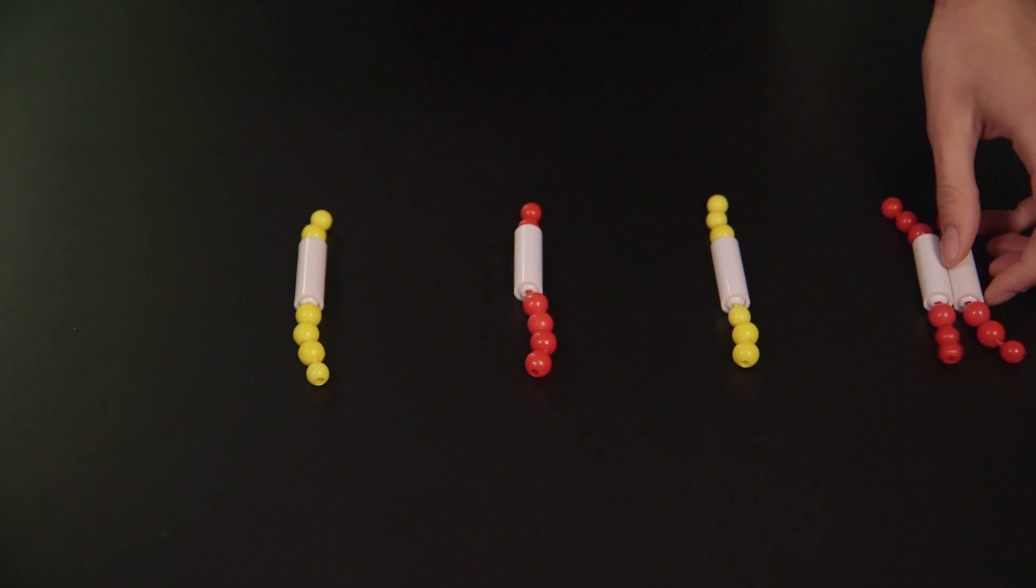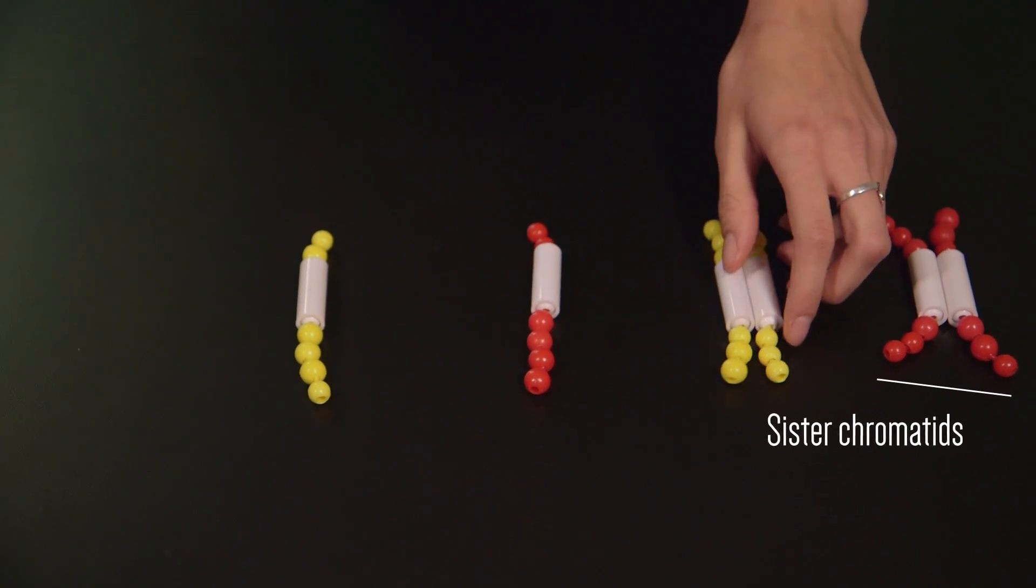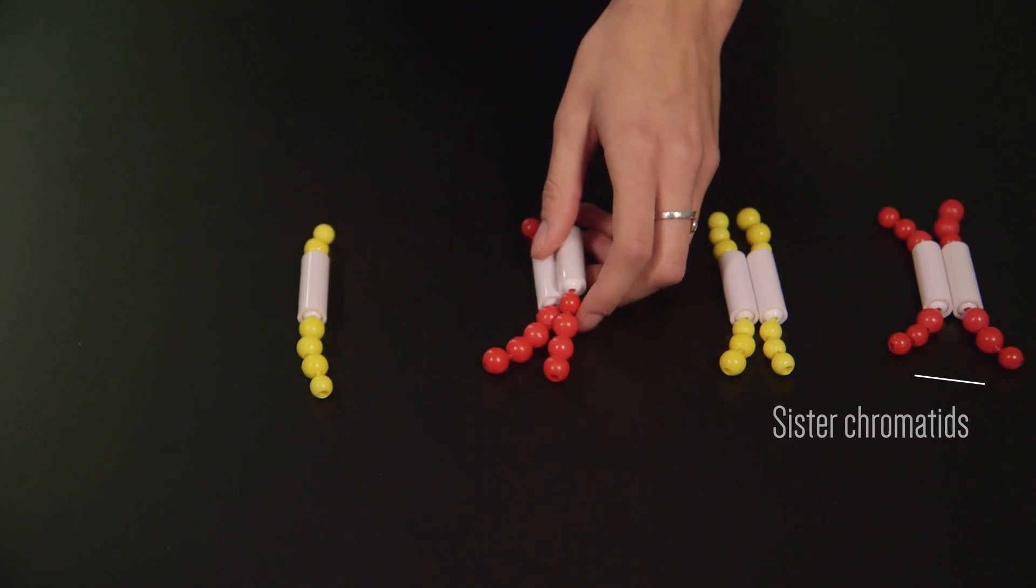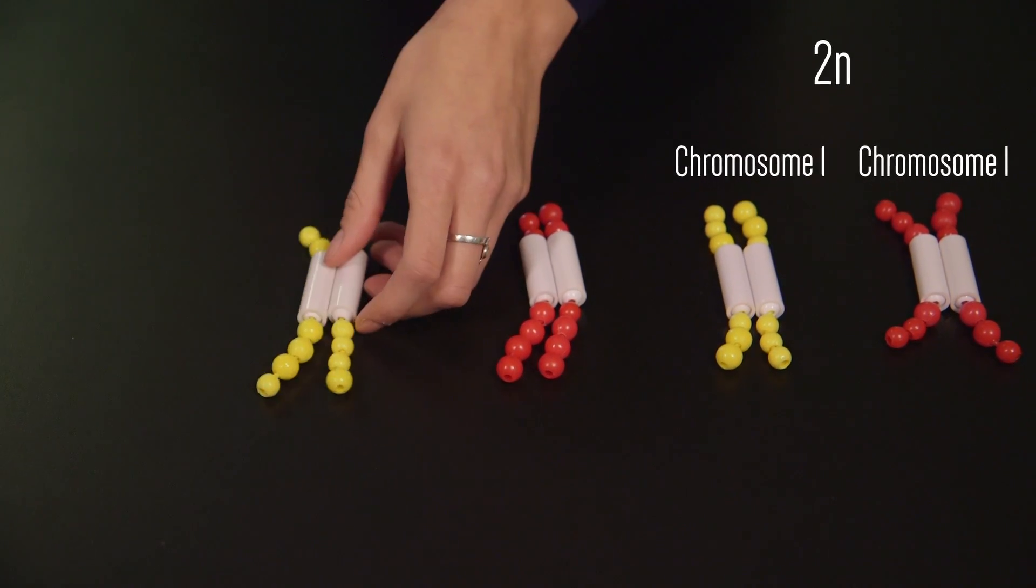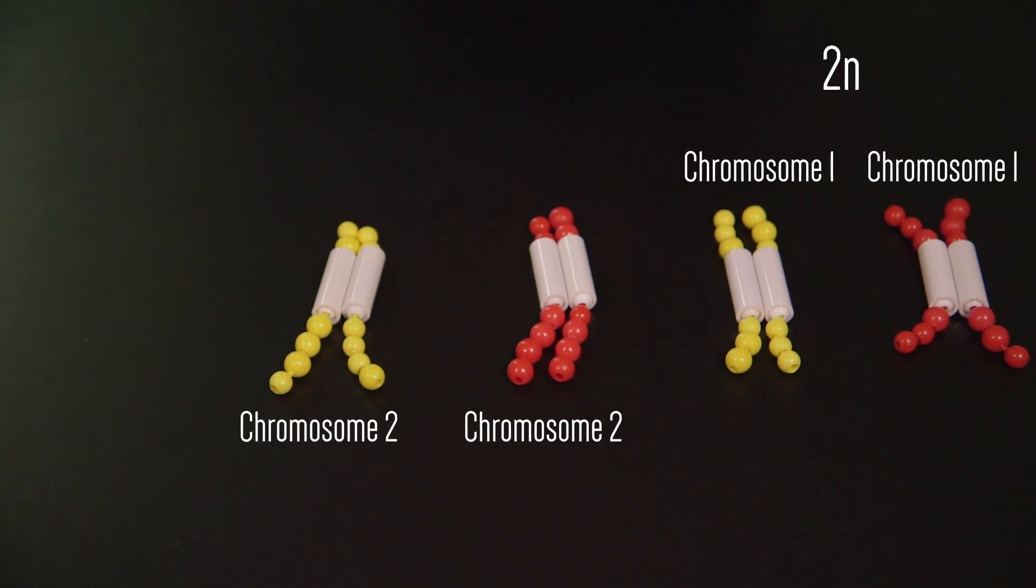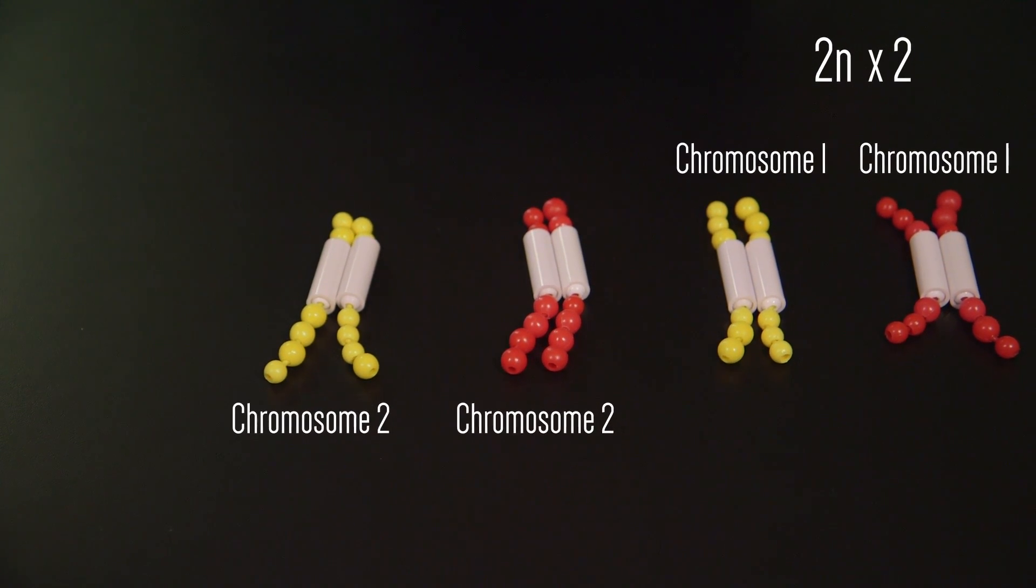In the S phase of the cell cycle, the chromosomes would replicate, making sister chromatids like these. Note that the cells are still diploid, that is 2n, but the chromosomes are replicated, which is denoted as times 2 in our graphic.